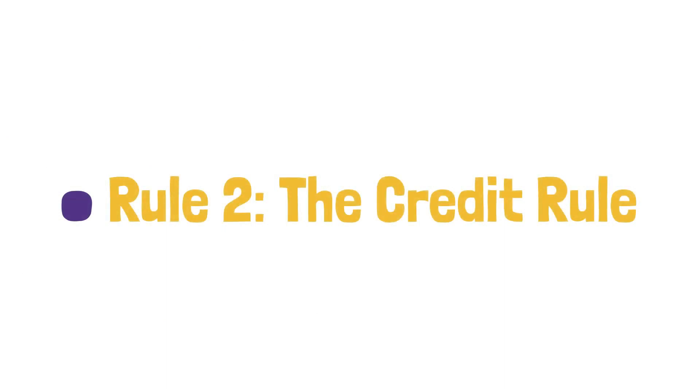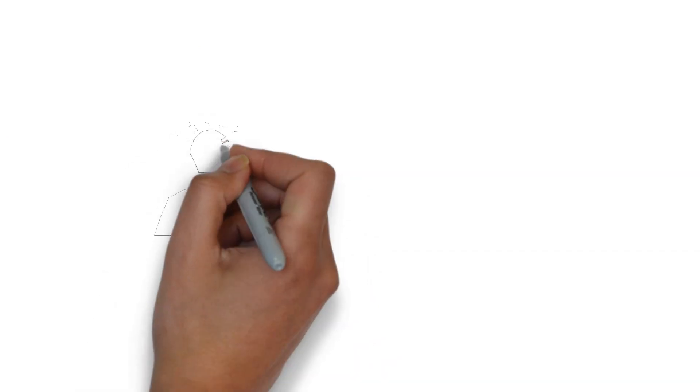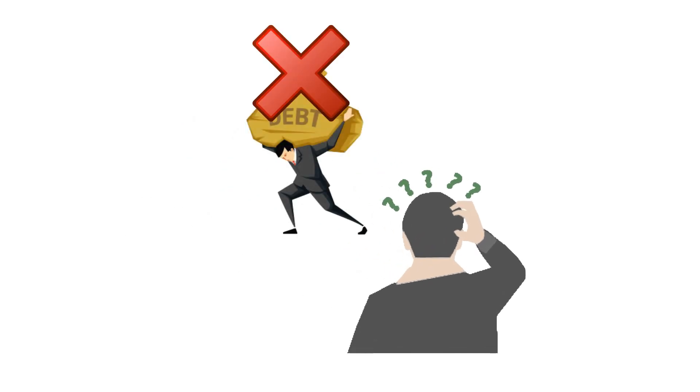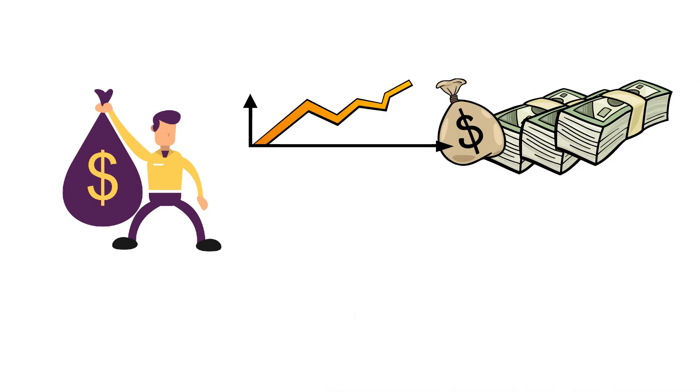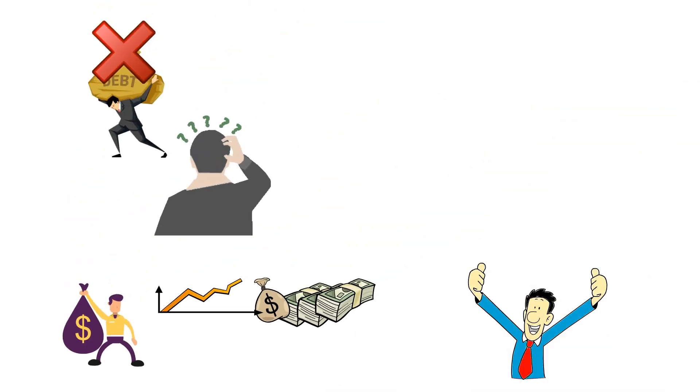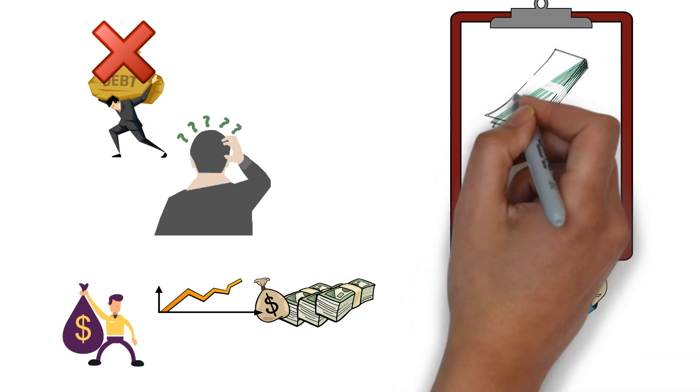Rule number two, the credit rule. One of the biggest misconceptions about the rich is that they never go into debt. In reality, wealthy individuals often use debt strategically as a tool to increase their wealth. But here's the catch. Not all debt is created equal.